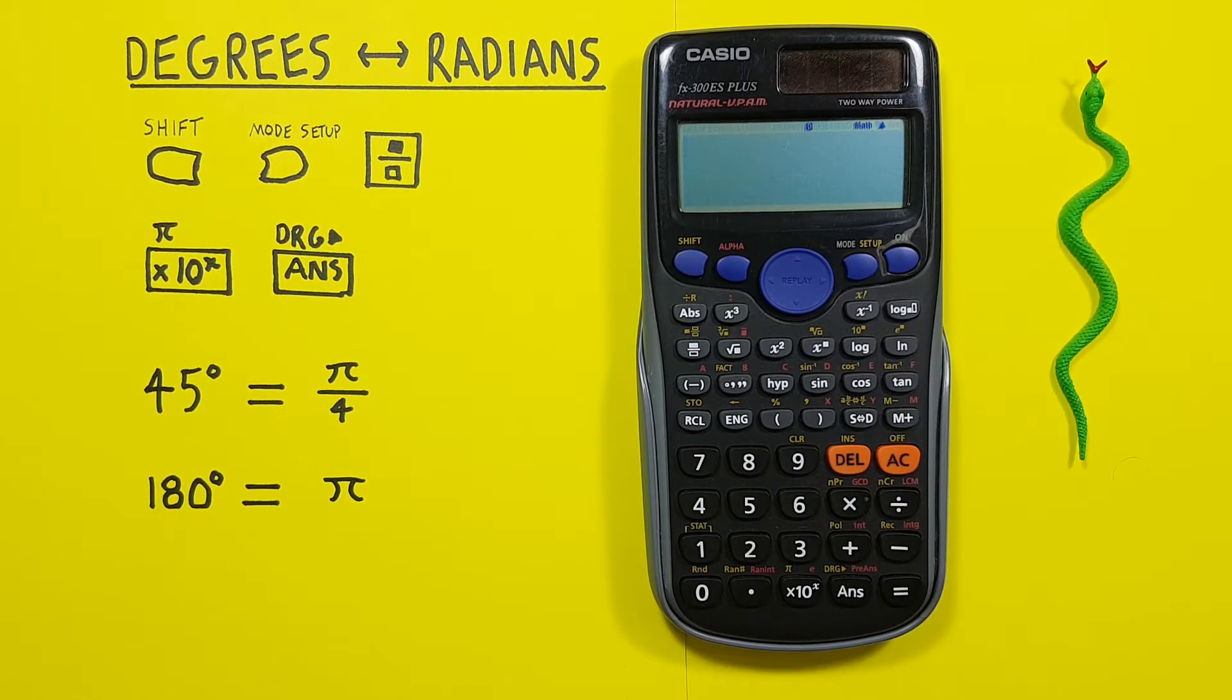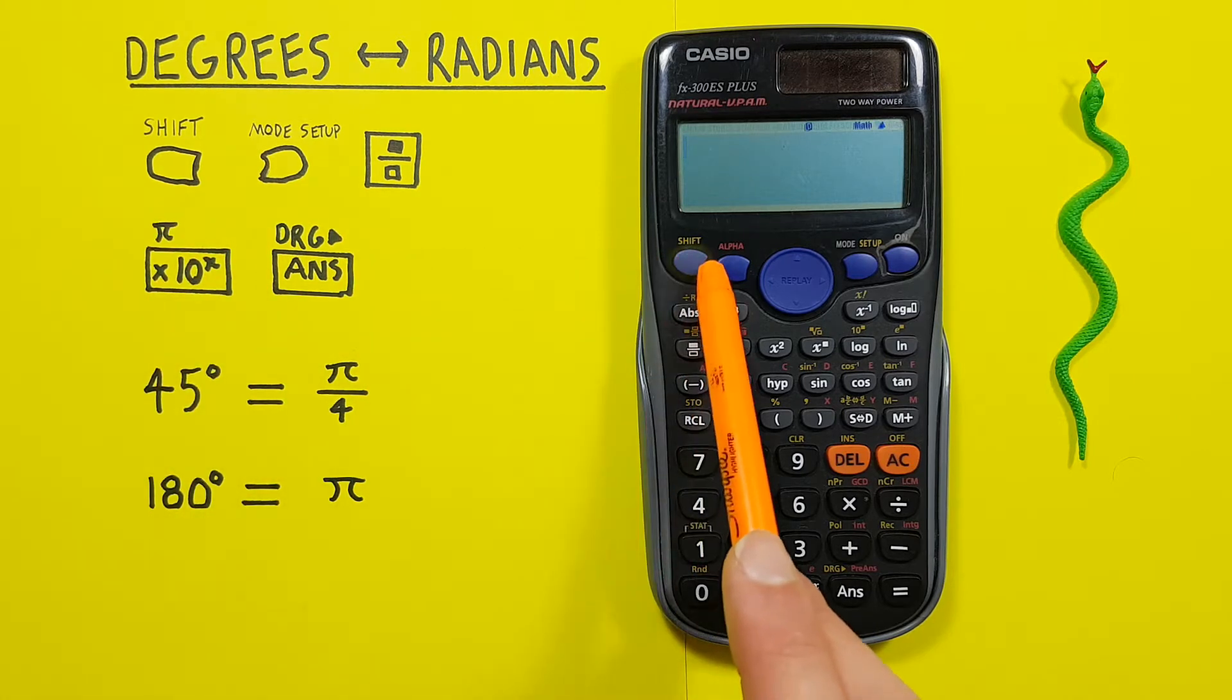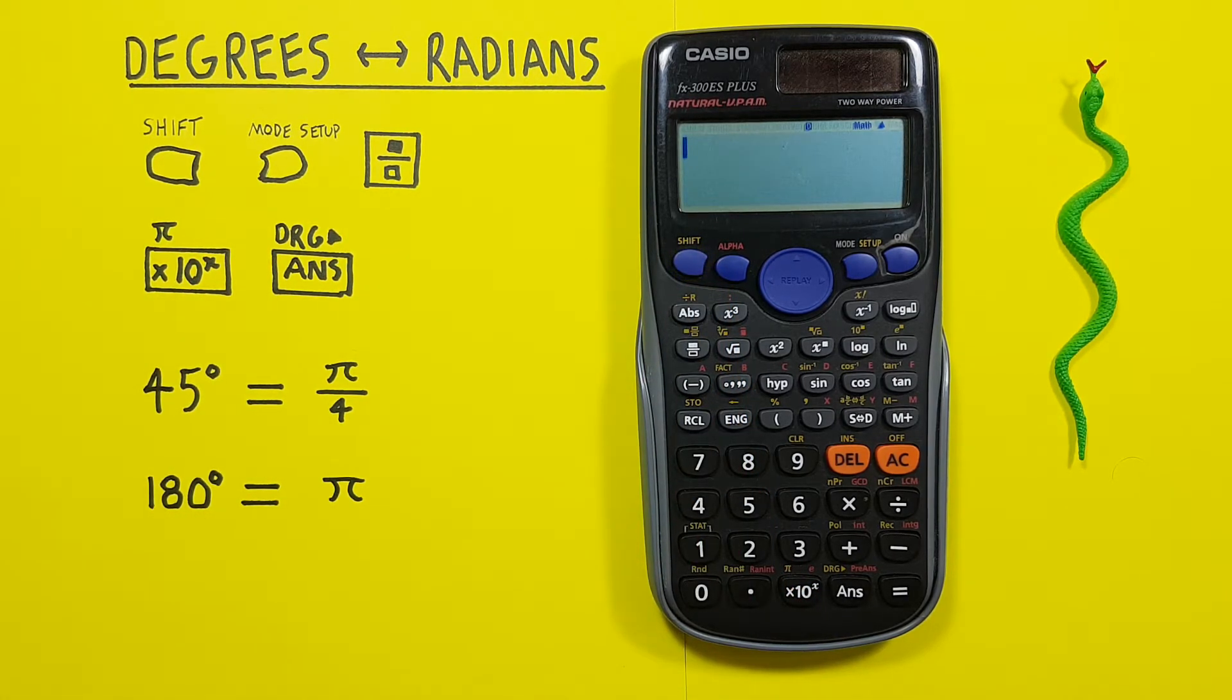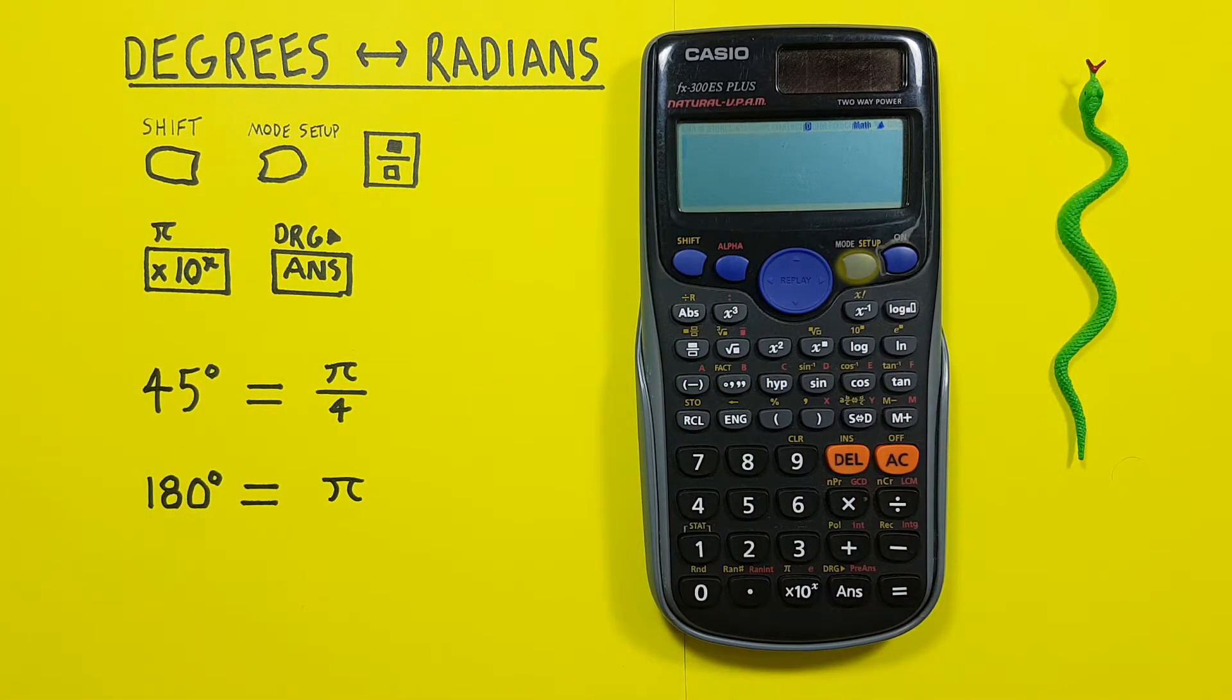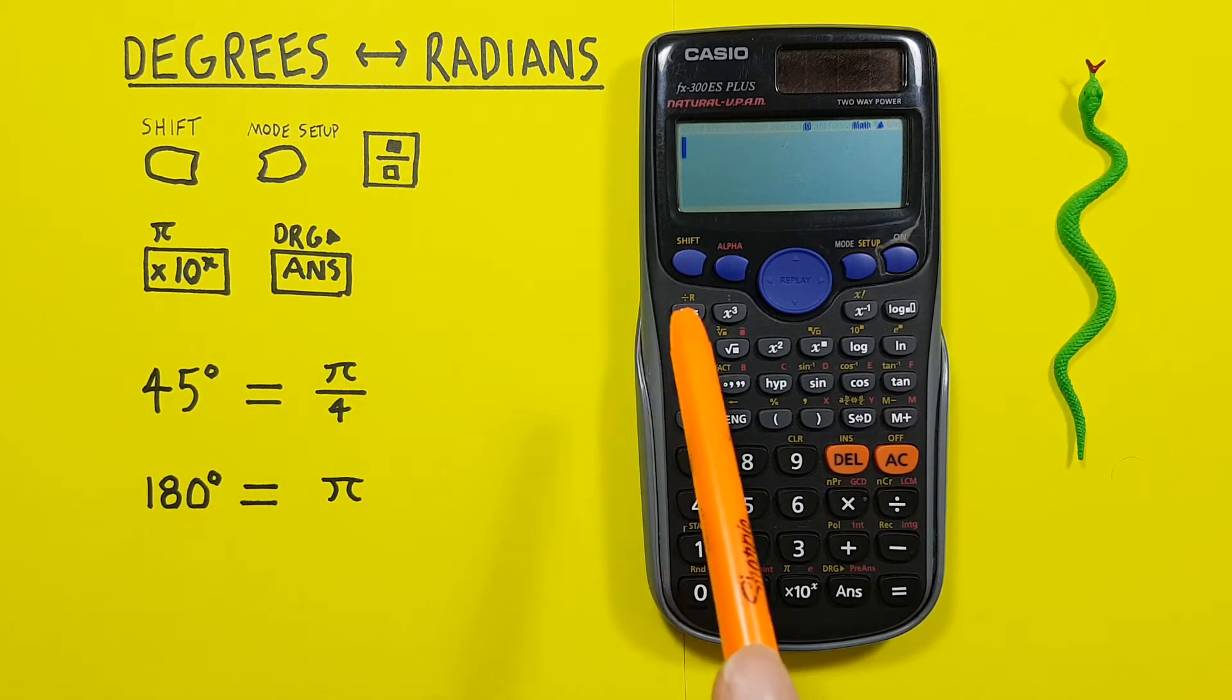To do this, we'll be using the Shift key that looks like this, located here. The Mode Setup key that looks like this, located here. The Fraction key that looks like this, located here.